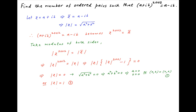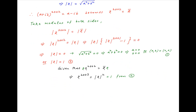Now, we go back to the original equation, which can be written as z raised to the power 2002 is equal to the conjugate of z. Multiplying both sides by z, this implies that z raised to the power 2003 is equal to z times the conjugate of z, which is equal to the square of the absolute value of z. But from Result 2, we know that the right hand side is equal to 1. And therefore, we have the equation z raised to the power 2003 is equal to 1.